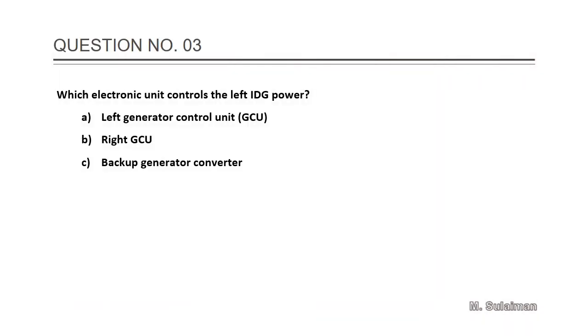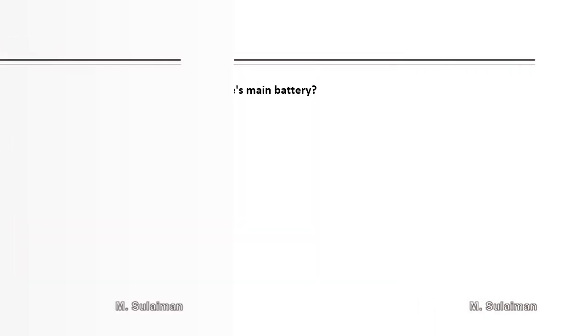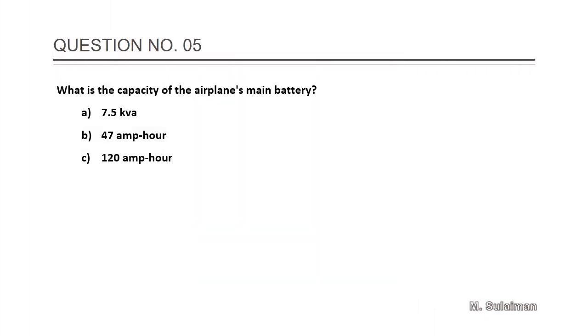Question number three: Which electronic unit controls the left IDG? The answer is A: left generator control unit GCU. Question number four: Which ELMS panel controls the standby power? Answer is B: E310 standby power management panel.